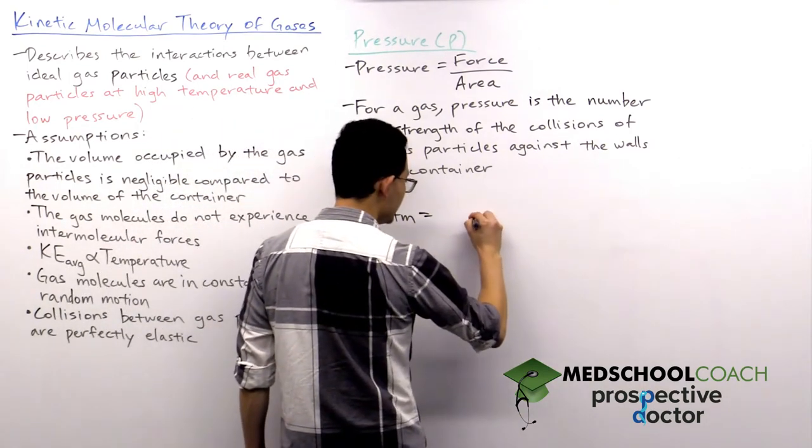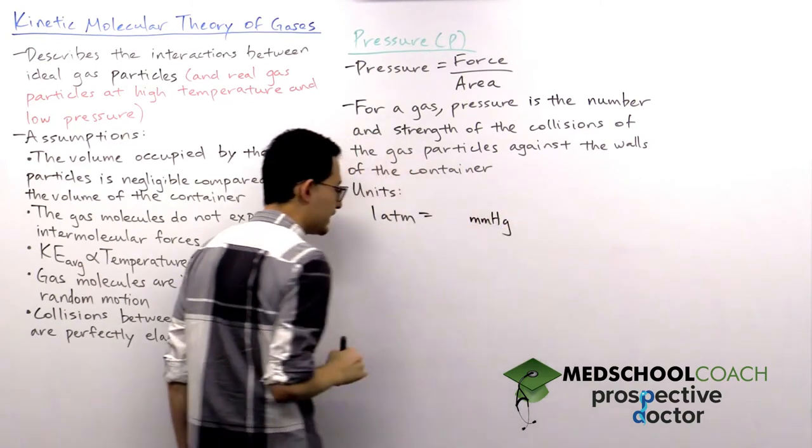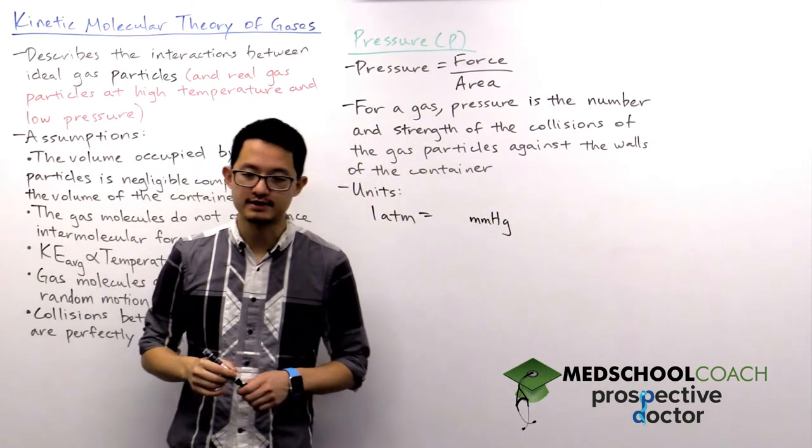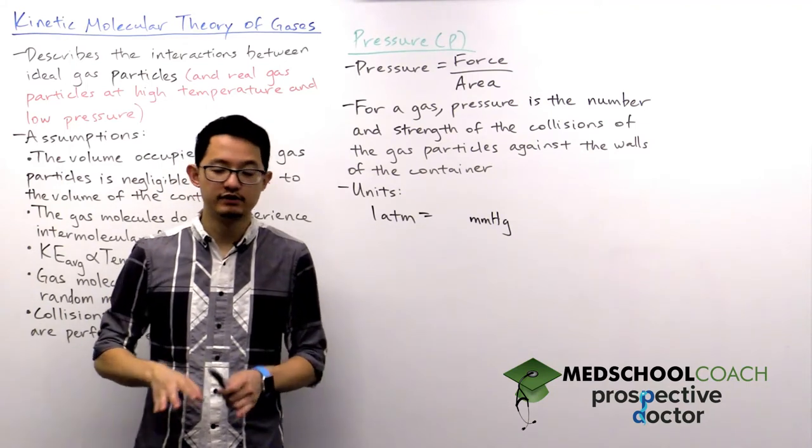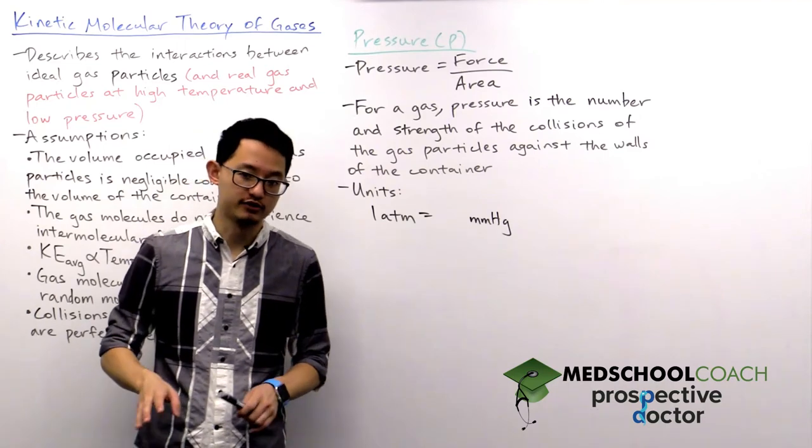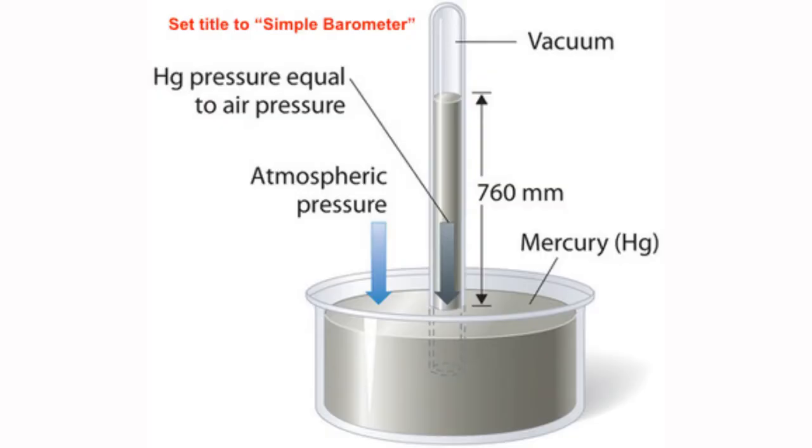And there are other units that you're going to see in the MCAT, so you do need to know how to interconvert between these units. The next one I want to look at is millimeters of mercury. And where this unit came from is essentially the simple mercury barometer, which you do have to have a general understanding of how it works. So if you take a look at this diagram, we have a simple mercury barometer. You have a container filled with mercury, and you place a tube that has been evacuated—so there are no gas particles in that tube—and you put it inside the mercury solution upside down.